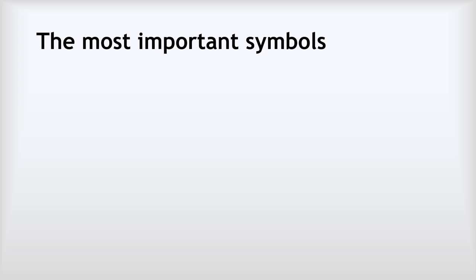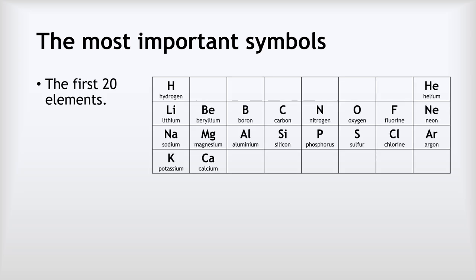Now you don't actually need to memorize any of the symbols, but it can be helpful to familiarize yourself with some of them because it will save you time in the exam. So the first 20 are given here. Note most of these are fairly straightforward. Most of them tend to be the first one or two letters. So hydrogen has a capital H, and beryllium has got Be, and so on. But there are a few that might catch you out. For example, silicon and sulfur often catch people out. Silicon is Si, whereas sulfur is just S.